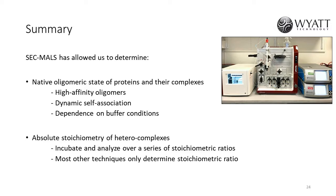What factors should be considered to lower the error percentage with the molecular weight obtained from SecMALS? The easiest way to have good, low errors with your molecular weights is to equilibrate the column and the SecMALS system for a long time — about two hours to sometimes even overnight. The longer the system is equilibrated, the better the baselines are, which reduces the error. Also, a high protein concentration gives much better signal-to-noise.